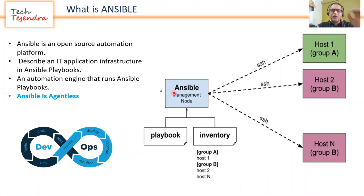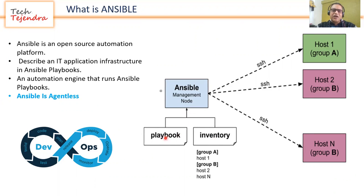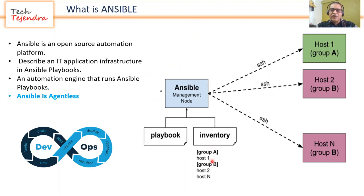So what is Ansible? Ansible is an automation tool. It does not use agents like other automation platforms such as Puppet or Terraform — it is agentless. It requires one machine on which Ansible is installed, called the control node. Ansible uses two main types of files: the playbook and the inventory. The playbook defines what automation we require on the managed hosts, and the inventory file contains the list of all managed hosts.